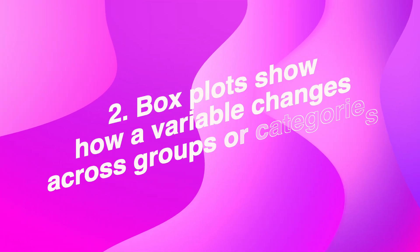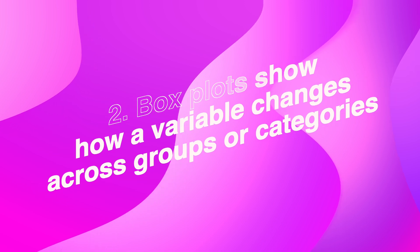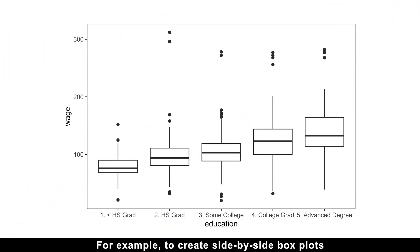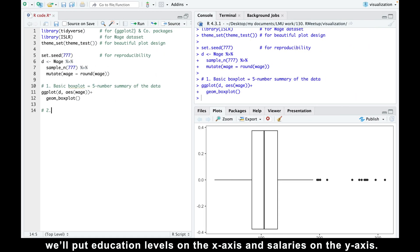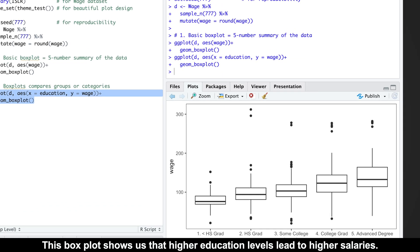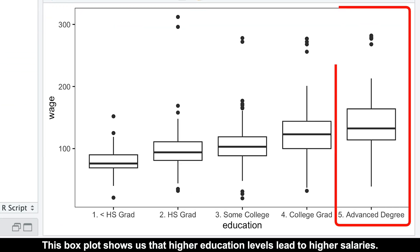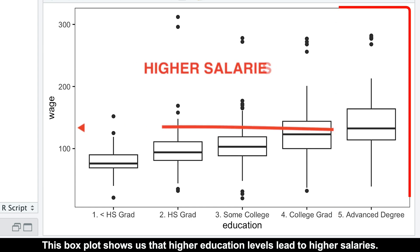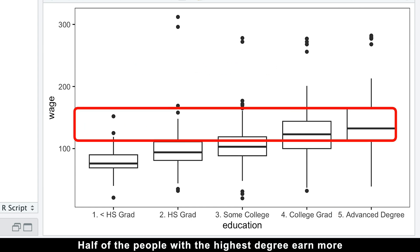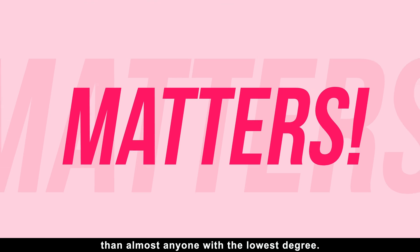Box plots show how a variable changes across groups or categories. For example, to create side-by-side box plots that compare the distribution of wages across different education levels will put education levels on the x-axis and salaries on the y-axis. This box plot shows us that higher education levels lead to higher salaries. Half of the people with the highest degree earn more than almost anyone with the lowest degree. So, education matters.